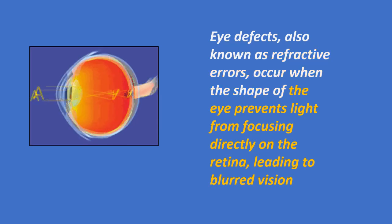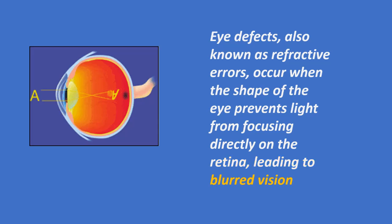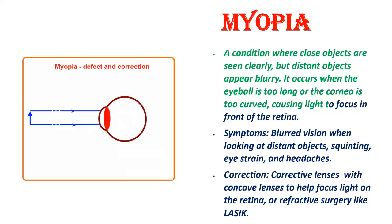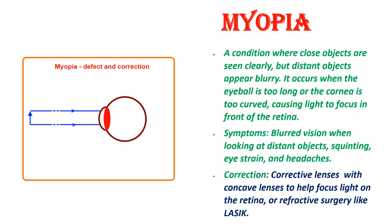Eye defects, also known as refractive errors, occur when the shape of the eye prevents light from focusing directly on the retina, leading to blurred vision. Myopia (nearsightedness): A condition where close objects are seen clearly but distant objects appear blurry. It occurs when the eyeball is too long or the cornea is too curved, causing light to focus in front of the retina. Symptoms include blurred vision for distant objects, squinting, eye strain, and headaches. Corrective lenses — concave lenses — or refractive surgery such as LASIK can help.